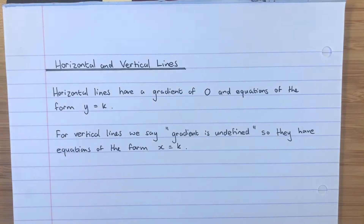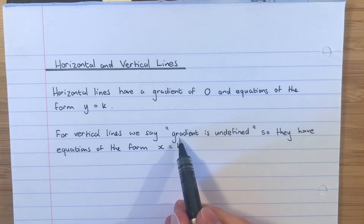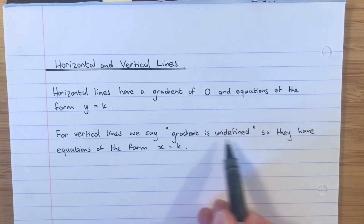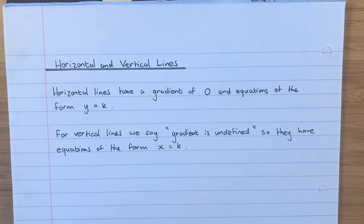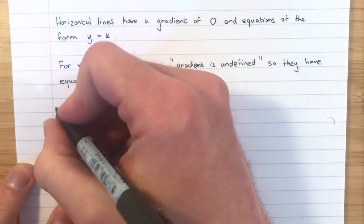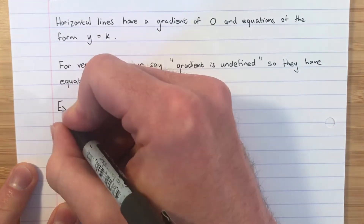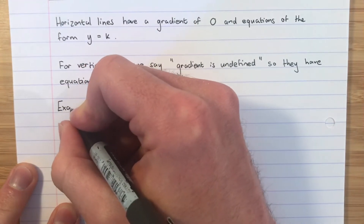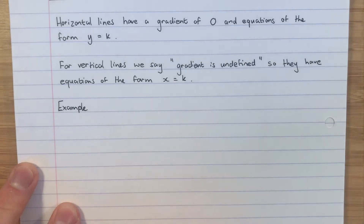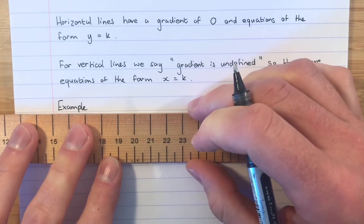This is really a National 5 concept, but at Higher you have to know it. Whenever you see a vertical gradient, you must write the words 'gradient is undefined' or 'm is undefined.' We'll come to that in the examples we're going to cover. There isn't a specific part of the green booklet that goes with this — it'll just come up sometimes.